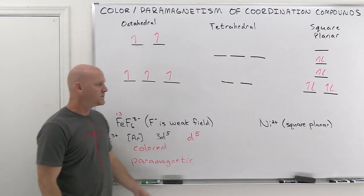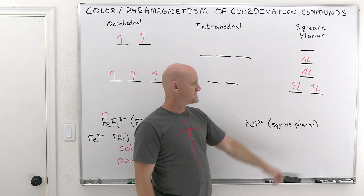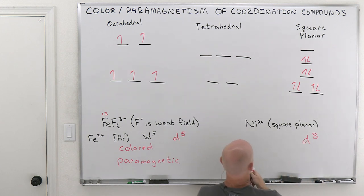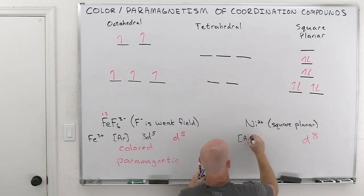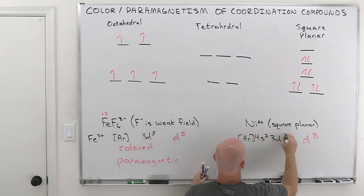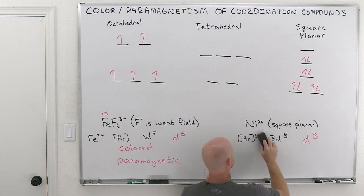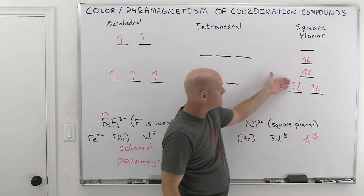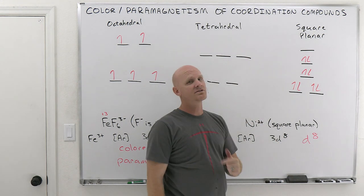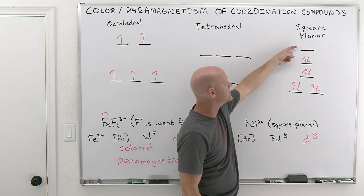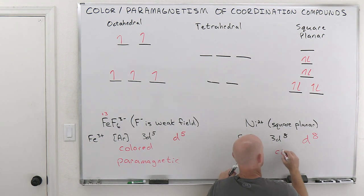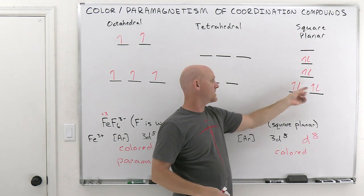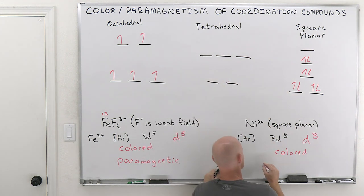The last individual example is Ni²⁺ in a square planar complex. If told it's square planar, you should automatically know it's D8. Nickel is argon 4s² 3d⁸; losing the two 4s electrons gives argon 3d⁸ — eight d-electrons. Square planar complexes always have D8, and filling eight electrons in the square planar splitting pattern always pairs them all up. So you always expect every square planar complex to be colored — electrons down here with an empty spot up high — but filling eight electrons means they're all paired, making it diamagnetic.